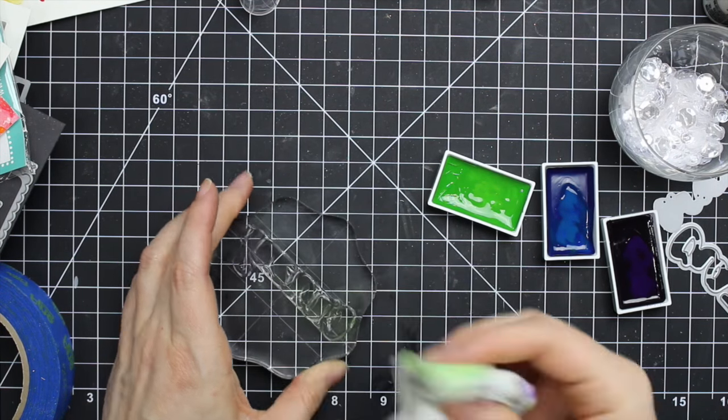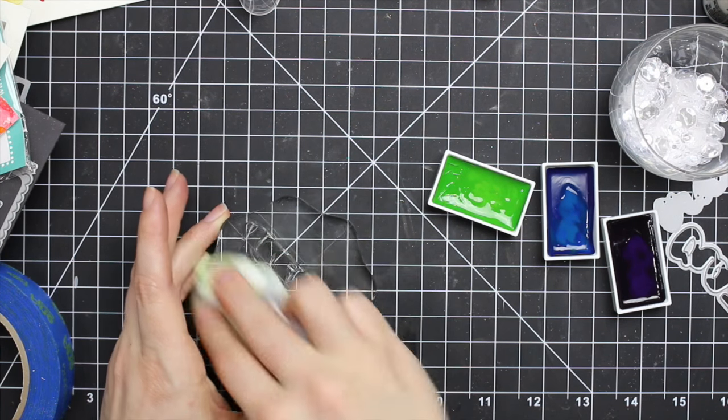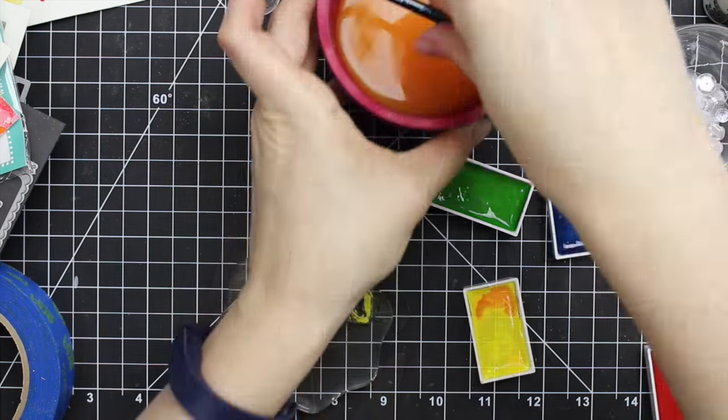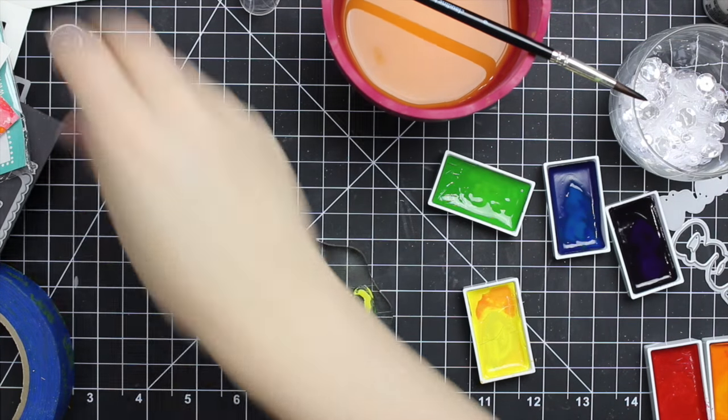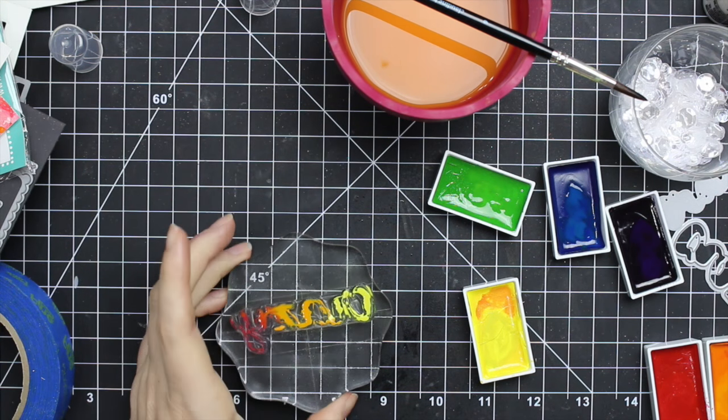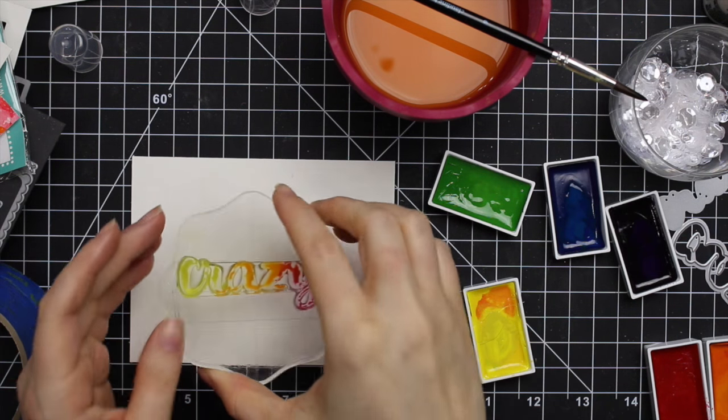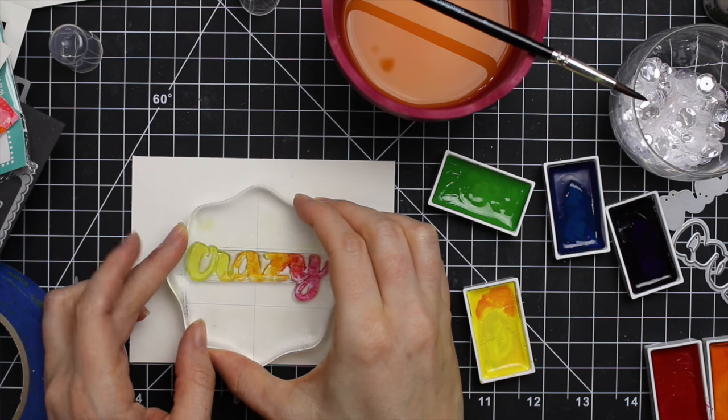And I just use a baby wipe to wipe off the stamp really well in between. These watercolors will stain your stamps. It doesn't bother me in the least. The longer it sits on them, the more it'll stain. With the pink, yellow, and orange, I ended up spritzing it with a little bit of water just to get the color to move a bit more.